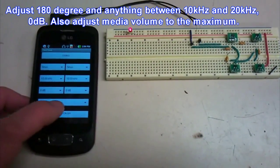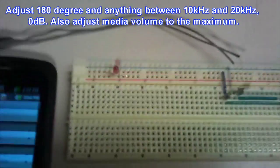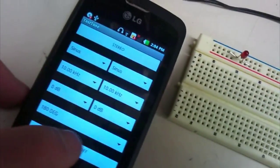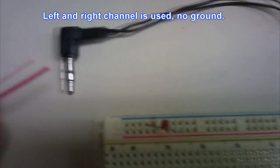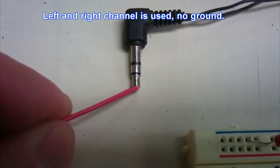Each cell phone has its maximum power point at a different frequency and here it's pretty good at 10 kHz. As I said, we don't use the ground connection here, just the left and the right channel.